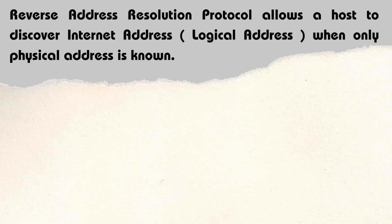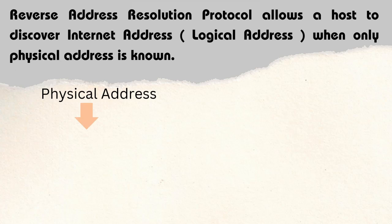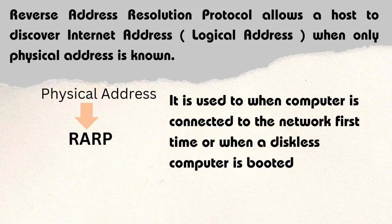Reverse Address Resolution Protocol allows a host to discover its internet address, that is IP address (also known as logical address), when only the physical address is known. With the help of RARP, we can find the logical address from the physical address. It is used when a diskless computer is first booted.